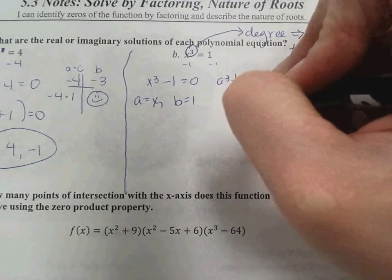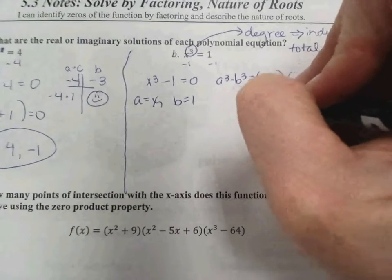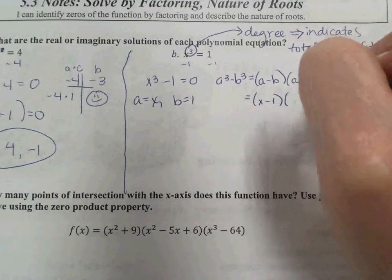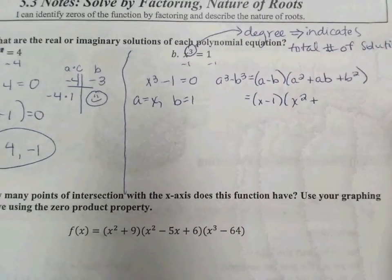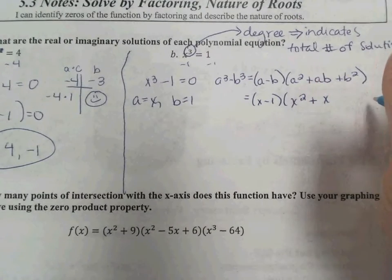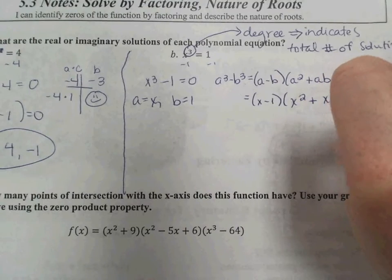So we can plug that in. And we get x minus 1 times a squared. So x squared plus x times 1 or 1x or just x. And then b squared. 1 squared is 1.